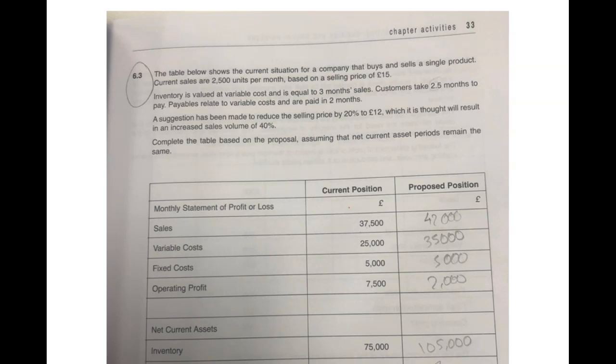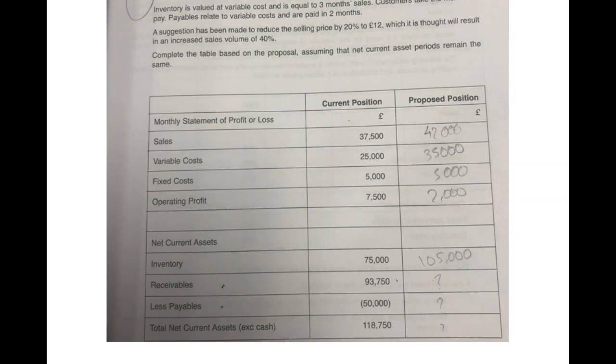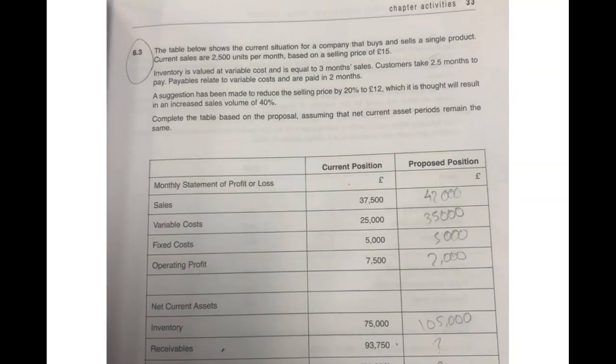She has tried the question and done some of the answers, as you can see here - some figures - but she's not sure about the last three. We'll go over one by one. These are variable costs, fixed costs, trade receivables, and trade payables. It's what we call 'what if' analysis.